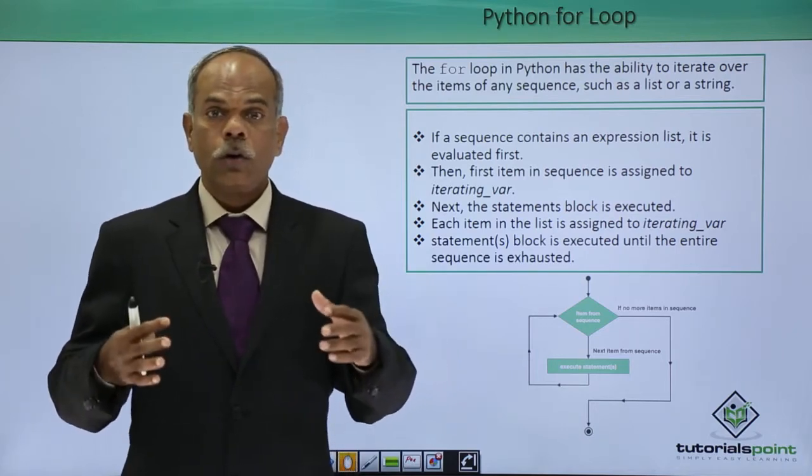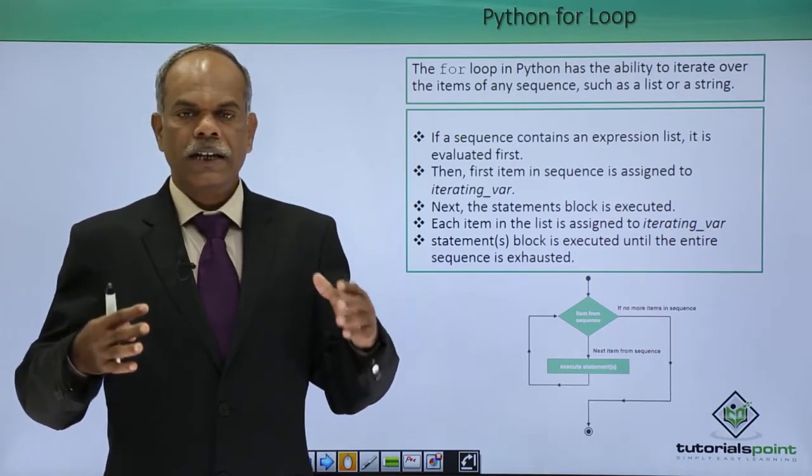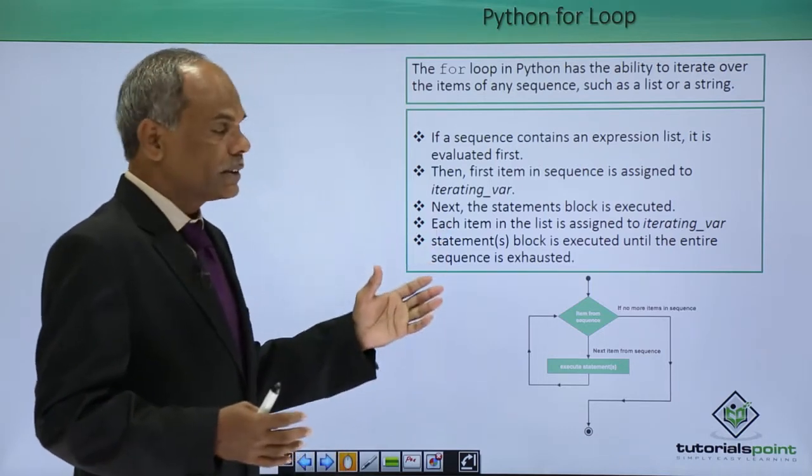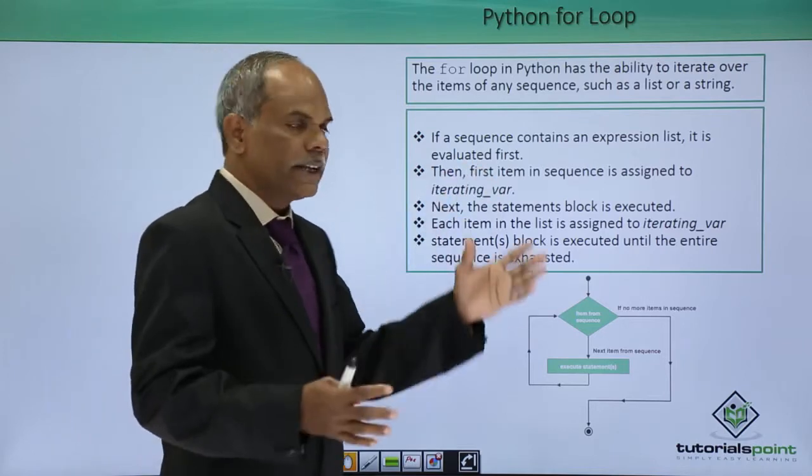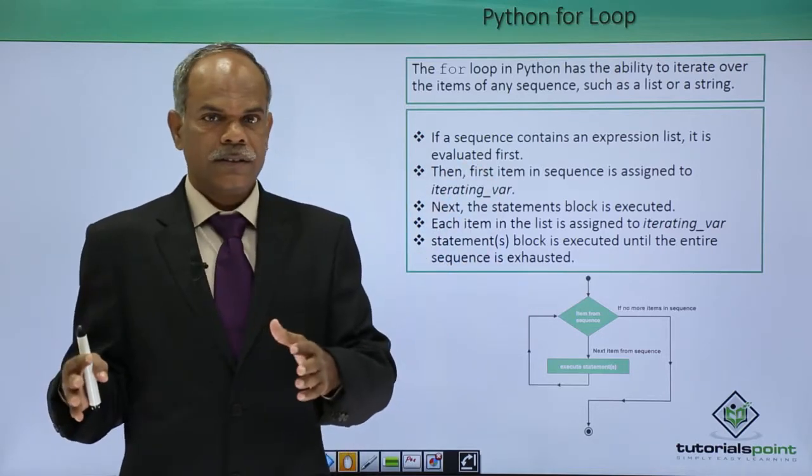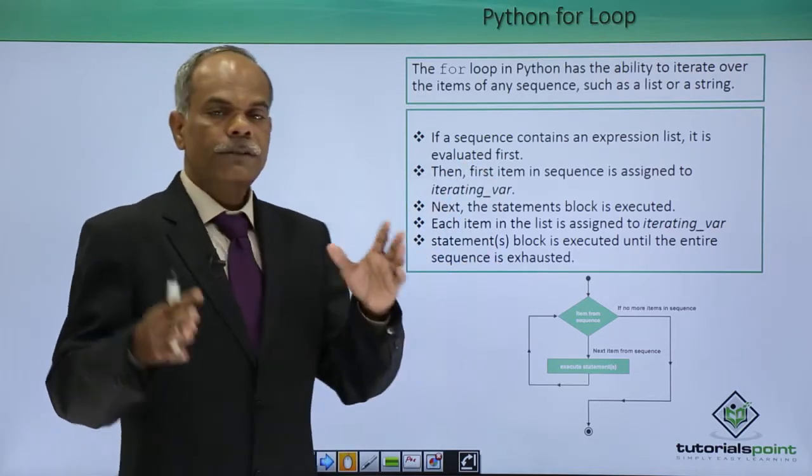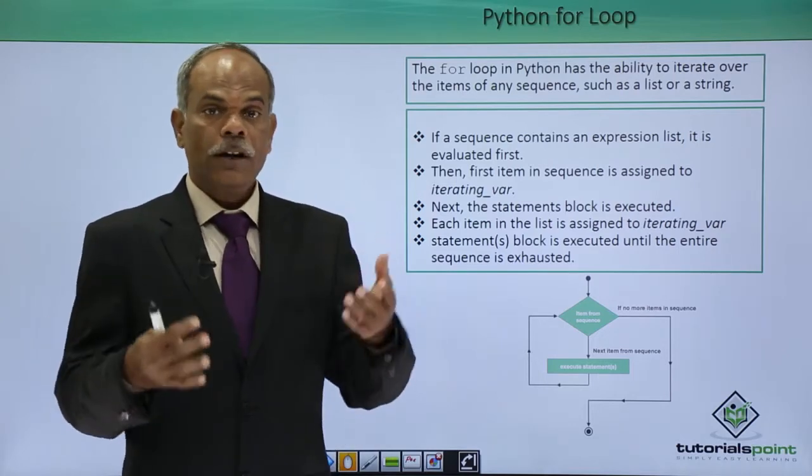So, how does for loop process the elements in a collection? What happens? If the sequence contains an expression list, then it is evaluated for the first time. Then what happens?